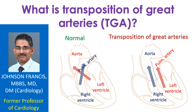Normally, the aorta arises from the left ventricle and the pulmonary artery from the right ventricle. In transposition of great arteries, this is reversed so that the aorta arises from the right ventricle and the pulmonary artery from the left ventricle. The left ventricle is the left lower chamber of the heart, and the aorta is the largest blood vessel carrying oxygenated blood to the whole body. The pulmonary artery carries blood to the lungs from the right ventricle for oxygenation.